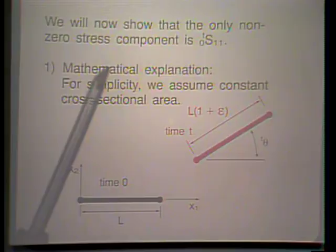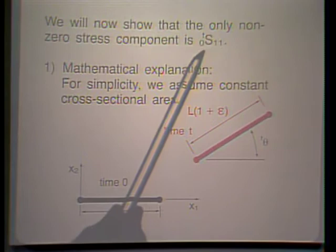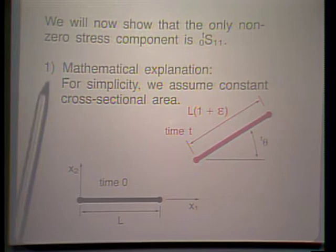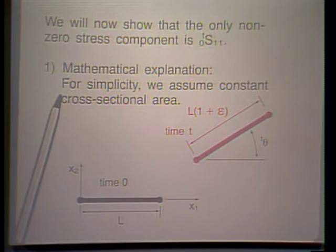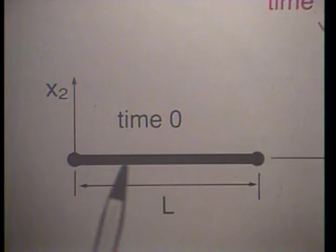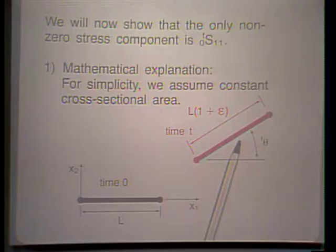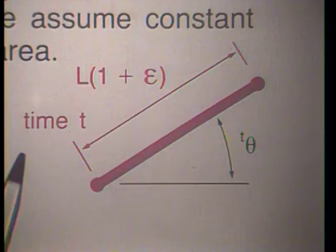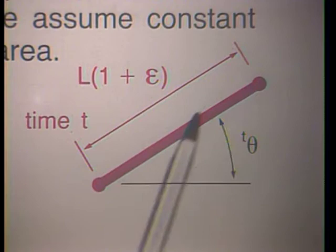For the truss, it is important to realize that the only non-zero stress is T₀S₁₁ — only the 1-1 component is non-zero. First, there is what we might call a mathematical explanation. Assuming that the cross-sectional area is constant, as we did in the updated Lagrangian formulation, here we have the element in its original configuration, and the element has undergone large displacements and large rotations to reach the configuration at time t. The length is almost constant, with a small epsilon representing the strain the truss has undergone, which is assumed to be very, very small.